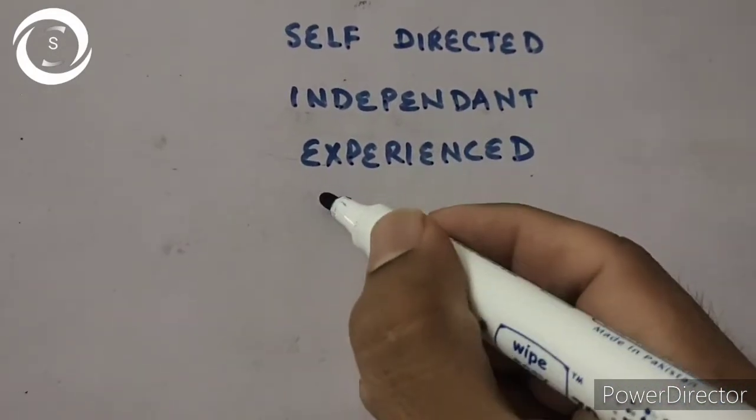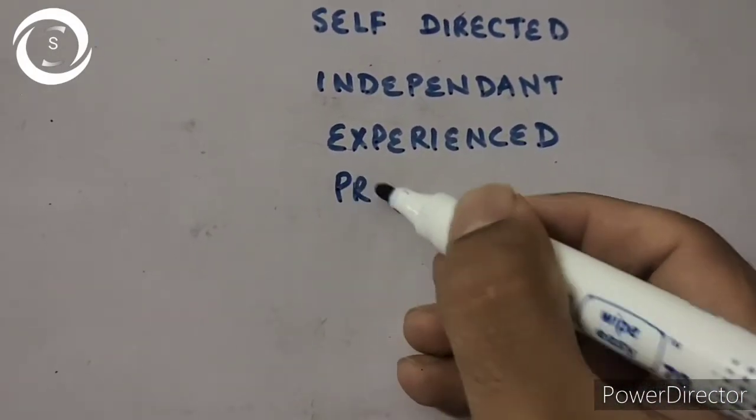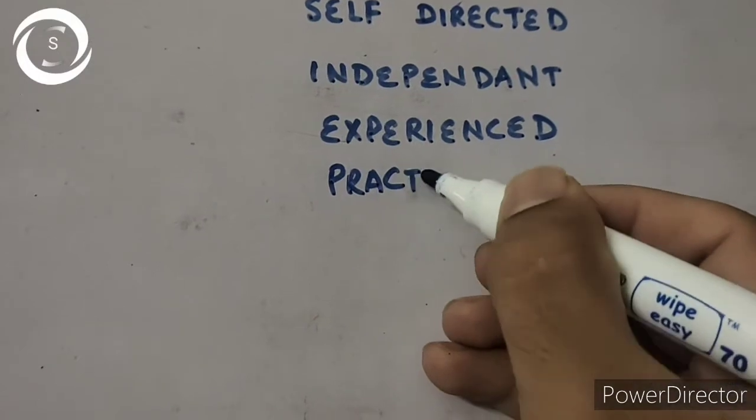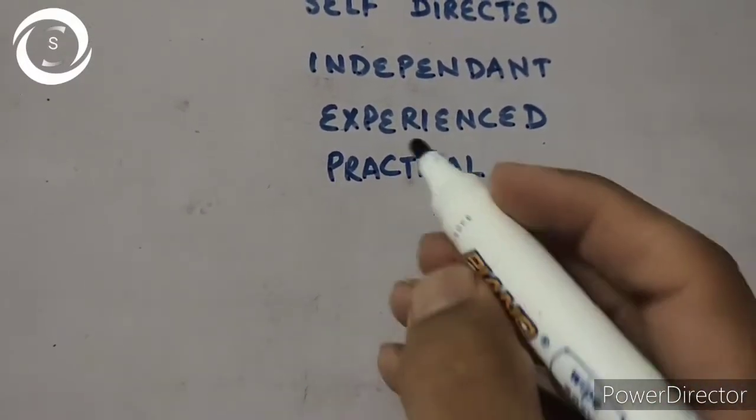Adults are experienced. Experience teaches them which methods suit them best for learning, so they like to learn by their past experiences of learning.